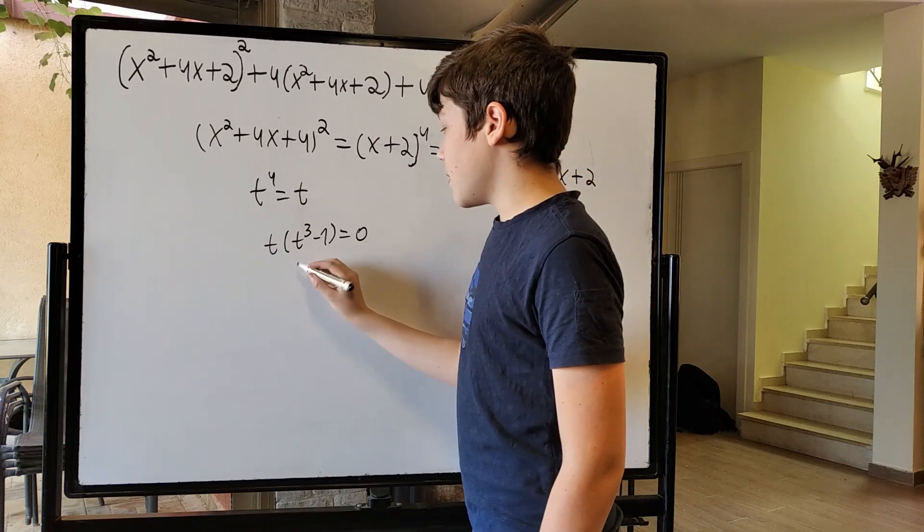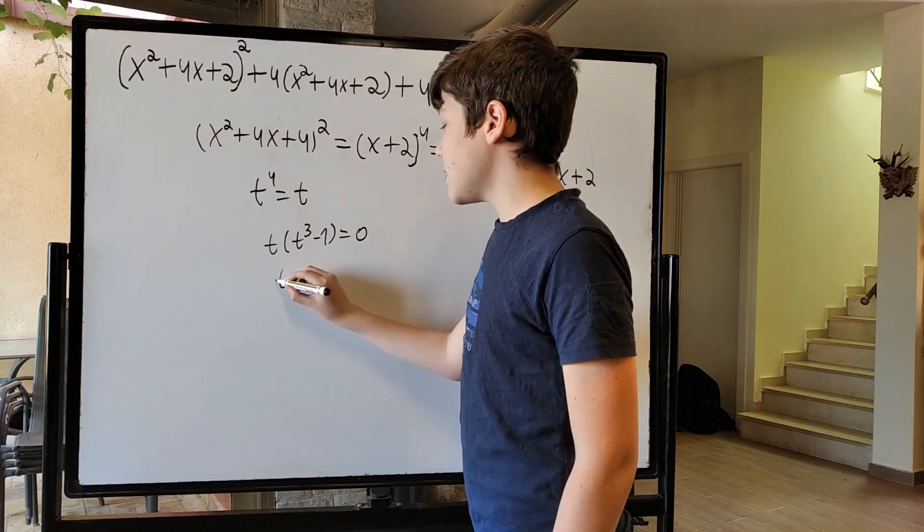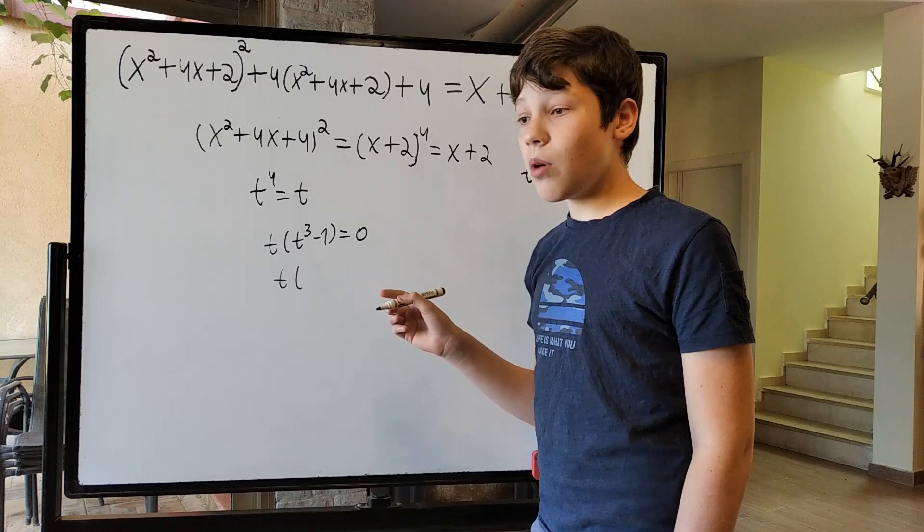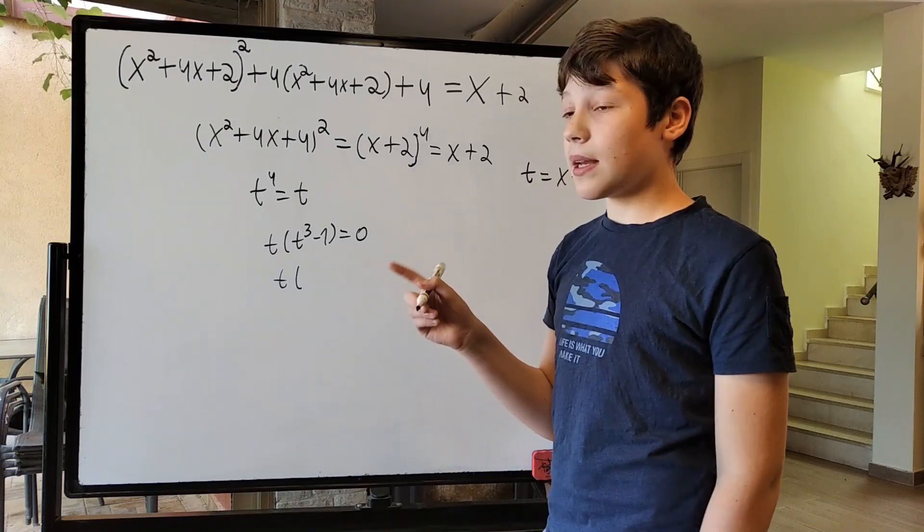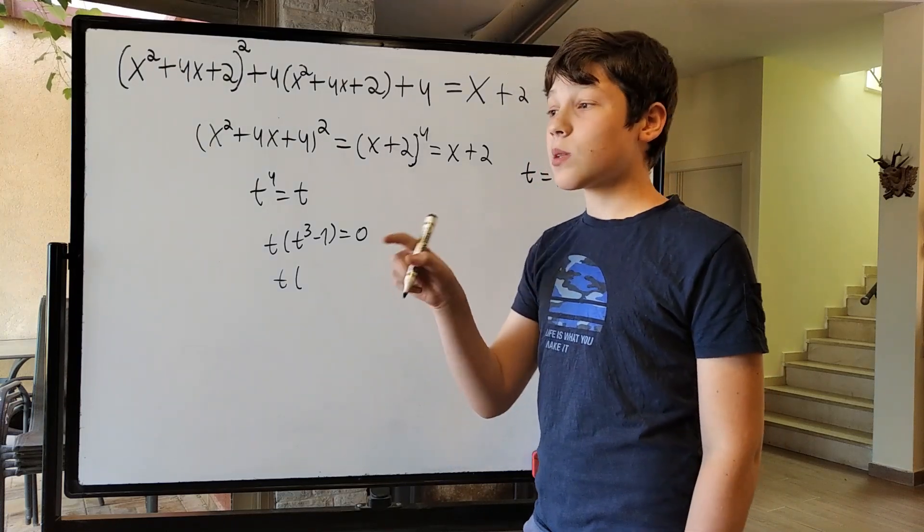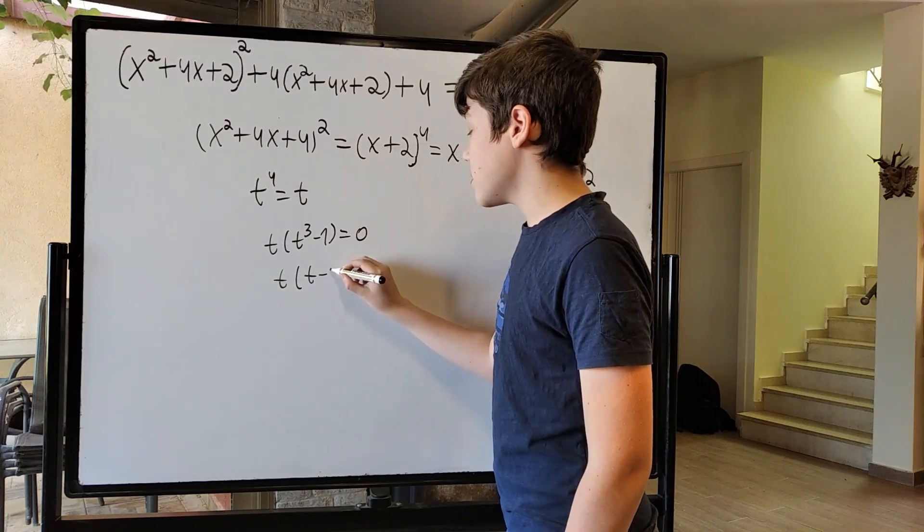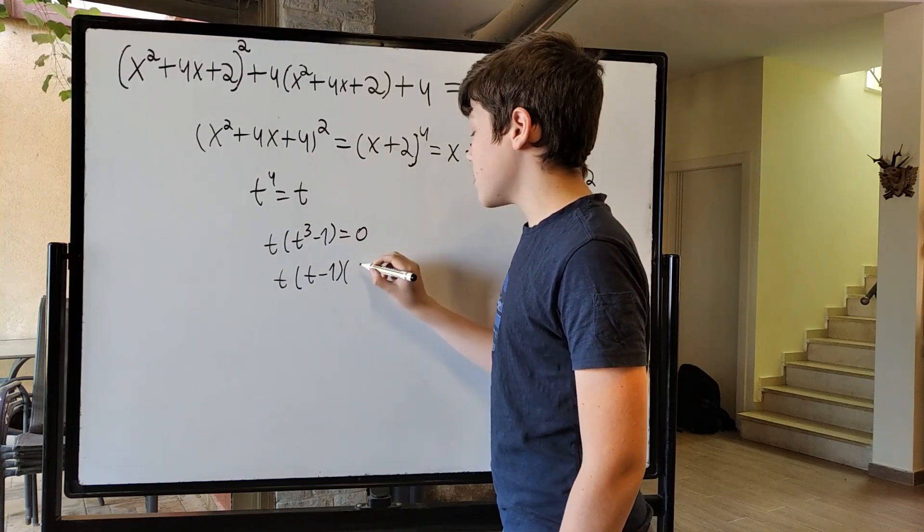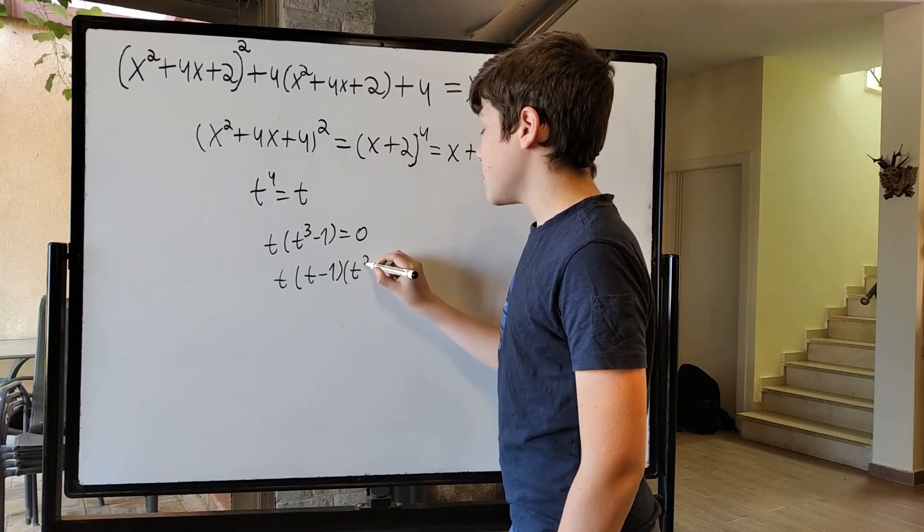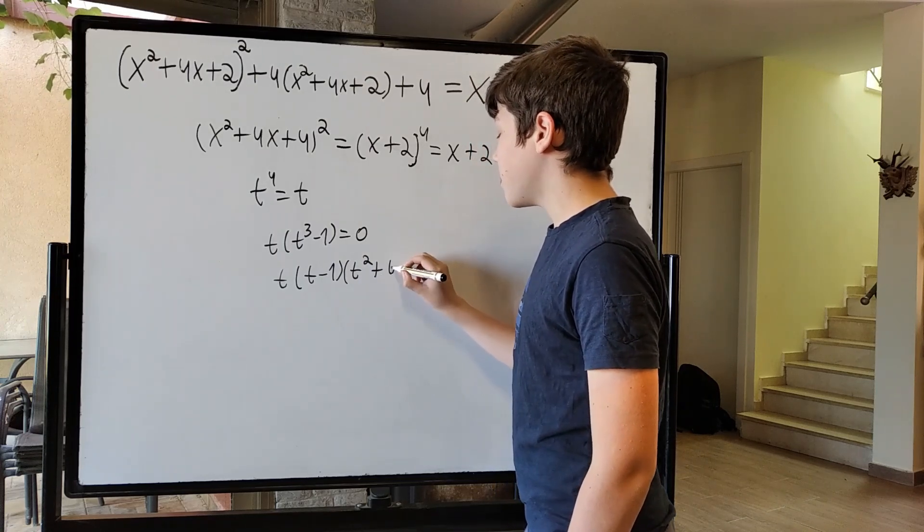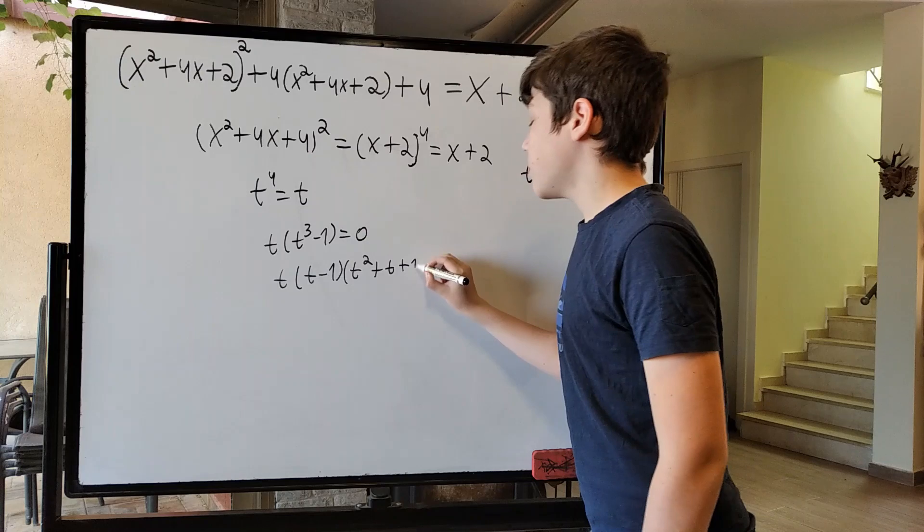So, we have t times, now t cubed minus 1 can be shown as t minus 1 times t squared plus t plus 1. t times t minus 1 times t squared plus t plus 1.